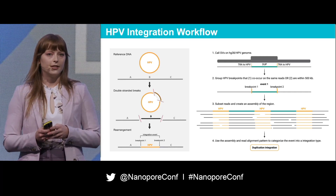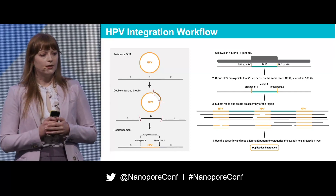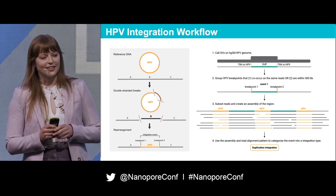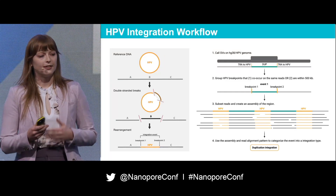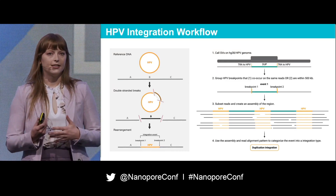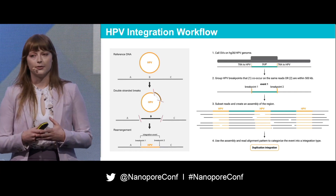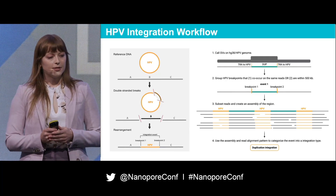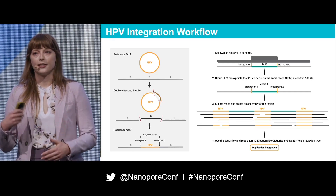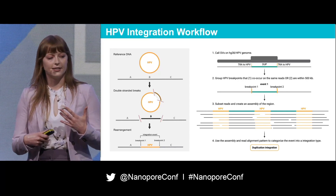The breakpoints were then grouped if one of two conditions were fulfilled: either the breakpoints were co-occurring on one or more of the same reads, or they were within 500kb of each other. The benefit of long reads is that by adding the condition of co-occurrence on the same read, we can identify integration events that span multiple chromosomes or are linked together from great distances through structural rearrangements — something that would not be possible without long reads. The reads from the samples were then subsetted so that reads belonging to each event were used to create assemblies, which were used along with read alignment patterns to categorize the integration events into a particular integration type.